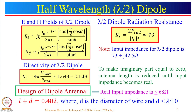Now let us look at the half-wavelength (lambda by 2) dipole antenna. The E and H fields are given by specific far-field expressions — note these are far-field patterns, not near-field. The directivity of the lambda by 2 dipole antenna is 2.1 dB. The radiation resistance of a lambda by 2 dipole is obtained by calculating the radiated power from the E and H fields and then deriving the radiation resistance from that.